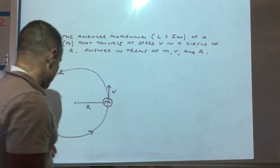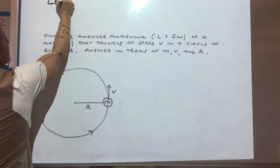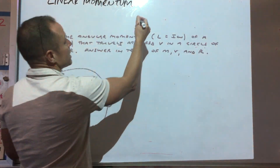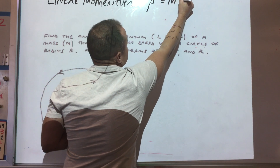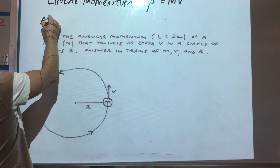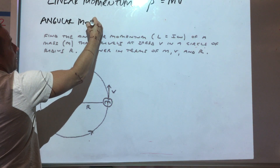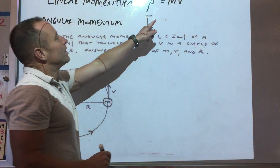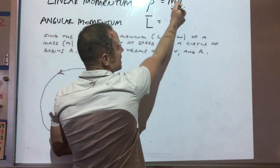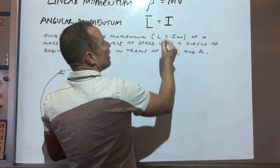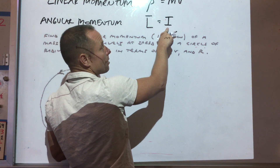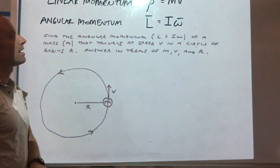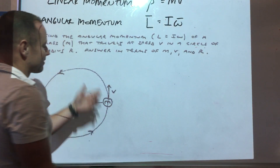A big thing to remember: you already know about linear momentum, and it's useful to go back to the linear analog. Linear momentum is P = mass × velocity. The rotational version is called angular momentum, traditionally denoted L. You just swap in the rotational quantities: the rotational version of mass is the moment of inertia, and instead of linear velocity you use angular velocity. So L = Iω.